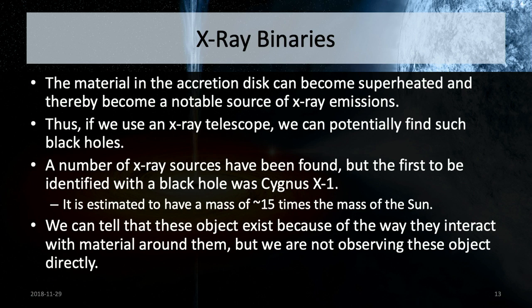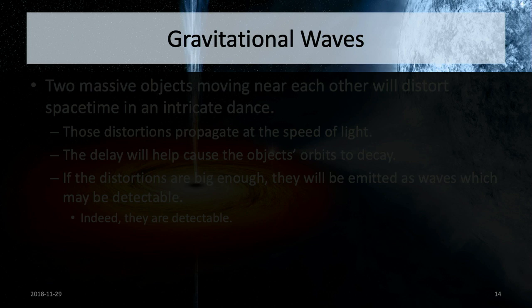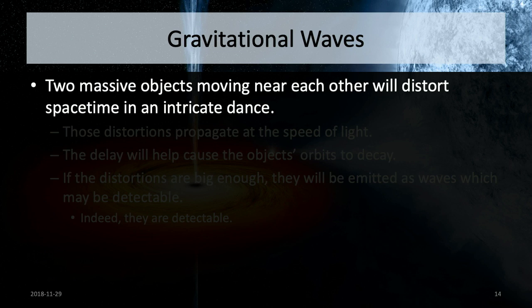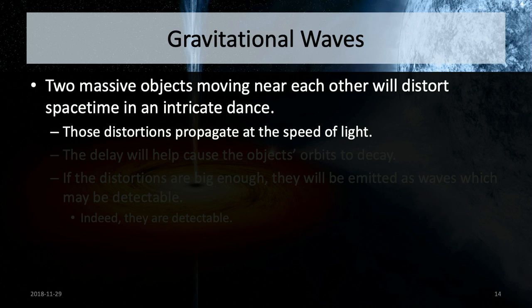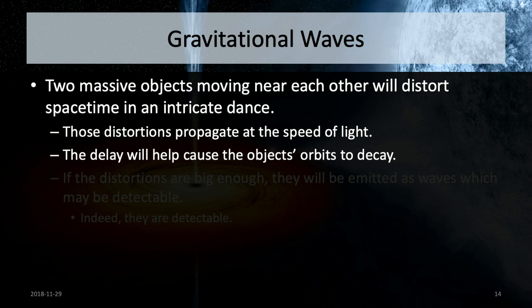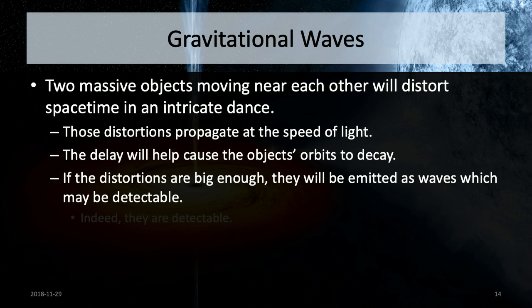One really notable way to observe black holes directly is with gravitational waves. Gravitational waves are caused by two different objects moving around each other and distorting space-time, typically in a binary system. Every given distortion propagates at the speed of light. Those waves cause the motion to decay, causing the objects to spiral in towards each other. If those distortions are big enough, they'll actually be detectable.